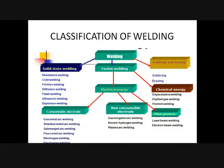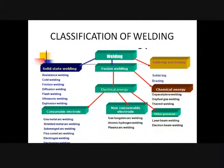Fusion welding: if a joint is produced by melting the parent material, it is called a fusion welding operation. Without melting the parent material, if a joint is produced, it is called a non-fusion welding operation. So if you melt the parent material and the joint is produced by melting, it is fusion; without melting of the parent material, it is non-fusion welding.